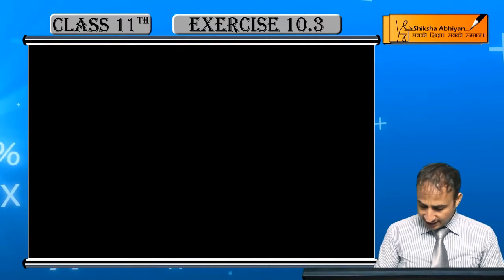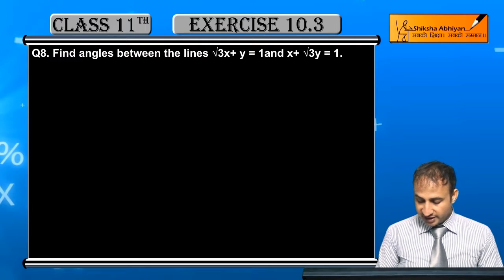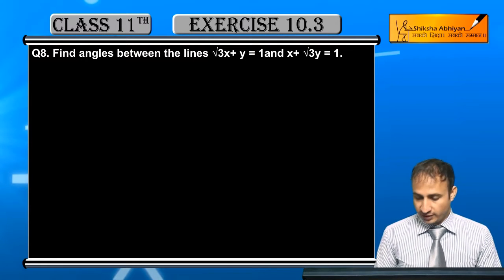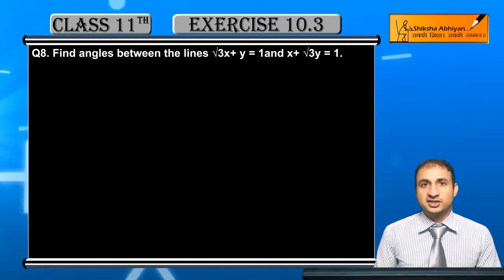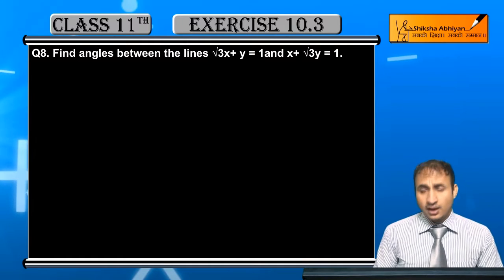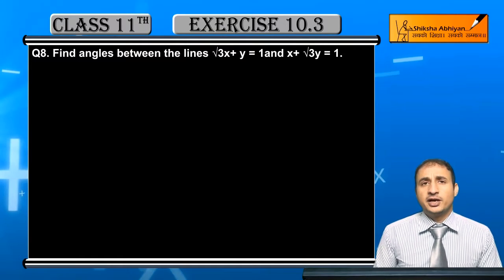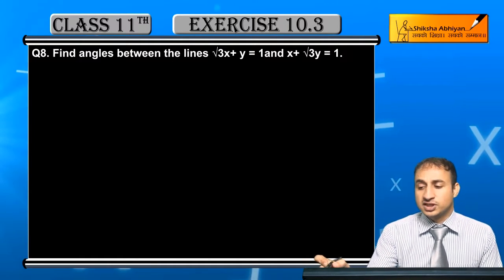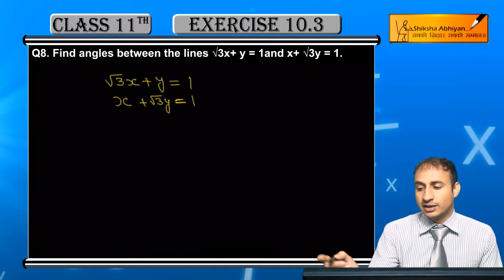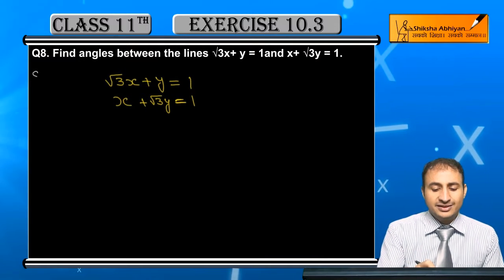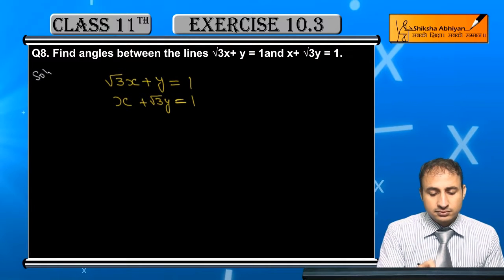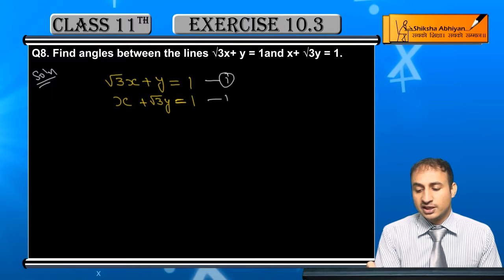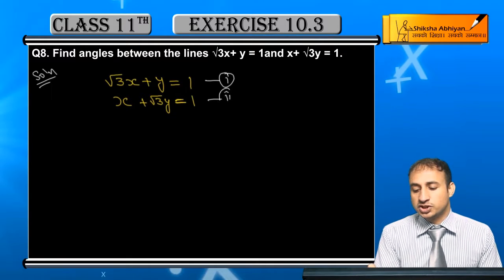Question 8 asks us to find the angle between the lines: root 3x plus y equal to 1, and x plus root 3y equal to 1. We need to find the angle between these two lines, so we mark them as equation 1 and equation 2.